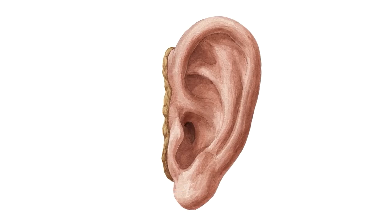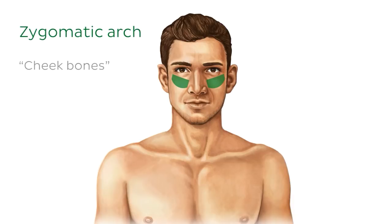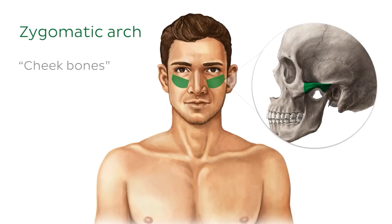The next set of landmarks we can see highlighted here — making our model look like he's sporting a bit of war paint — are known as the zygomatic arches and give rise to the shape and structure of the cheeks. The zygomatic arch is actually formed by two bones: the zygomatic process of the temporal bone and the temporal process of the zygomatic bone. The zygomatic arches have a big influence on the appearance of the face and can be easily palpated.